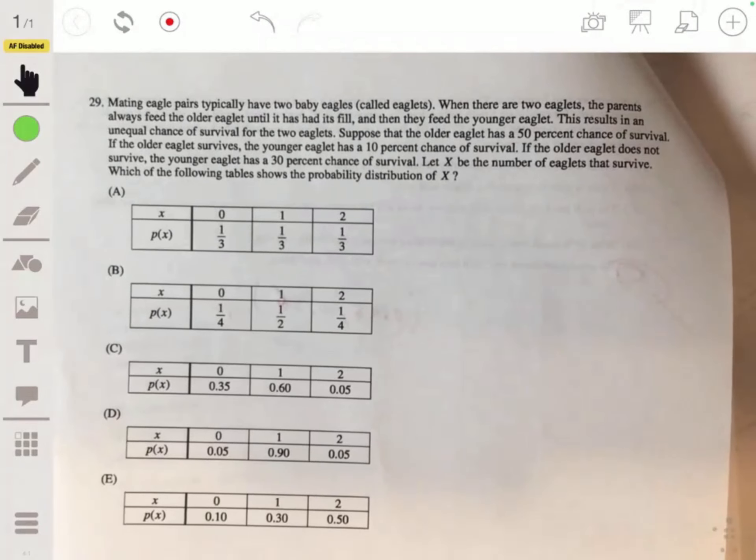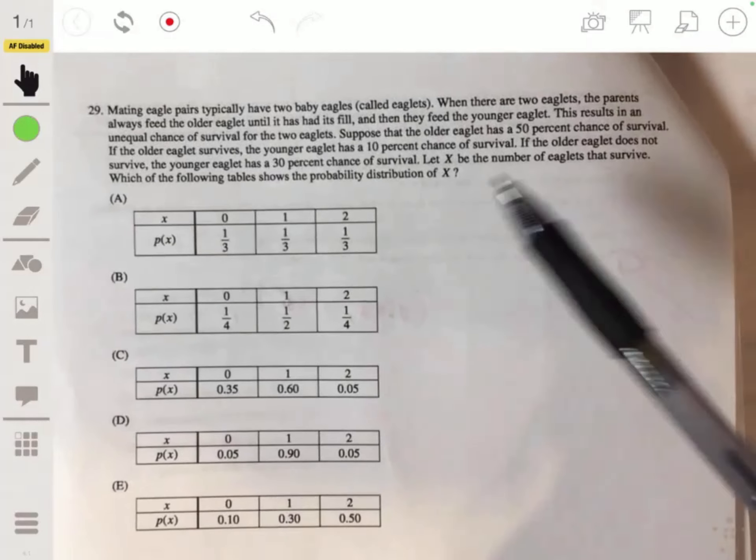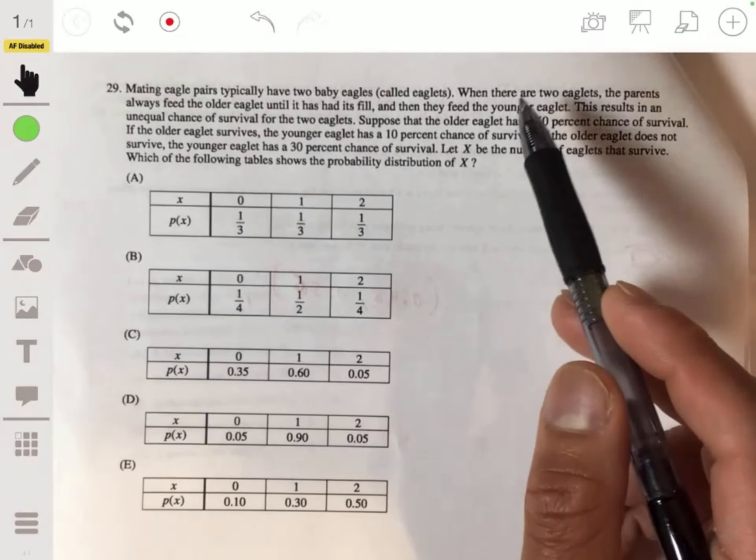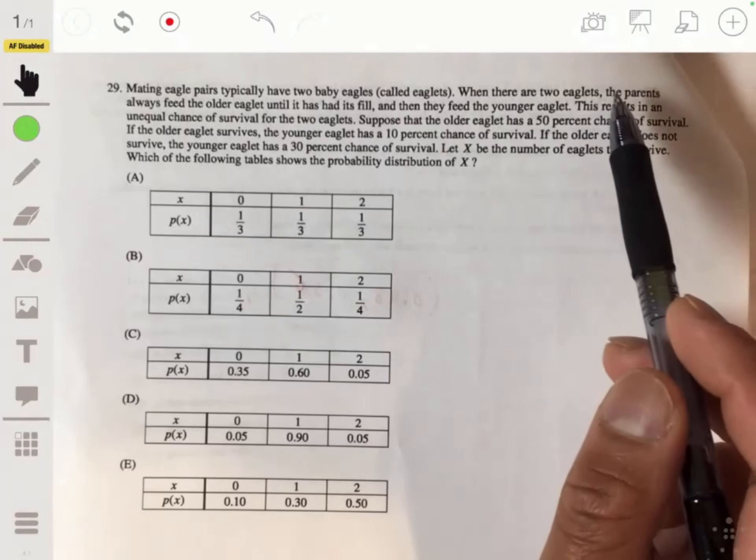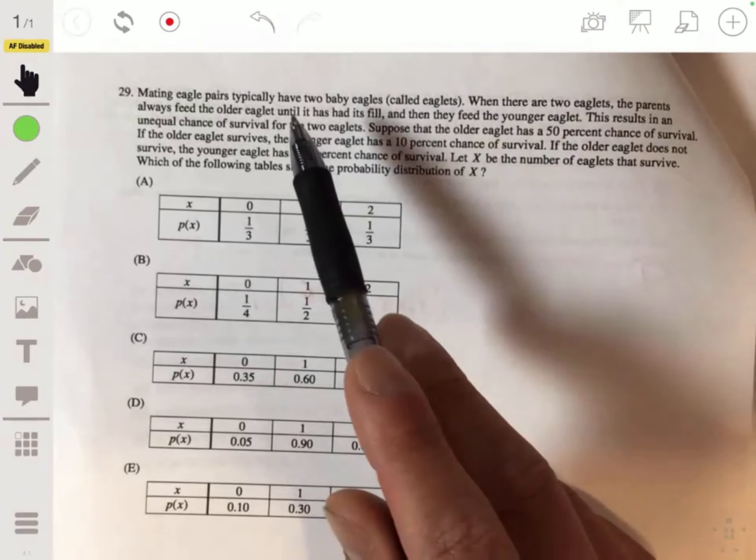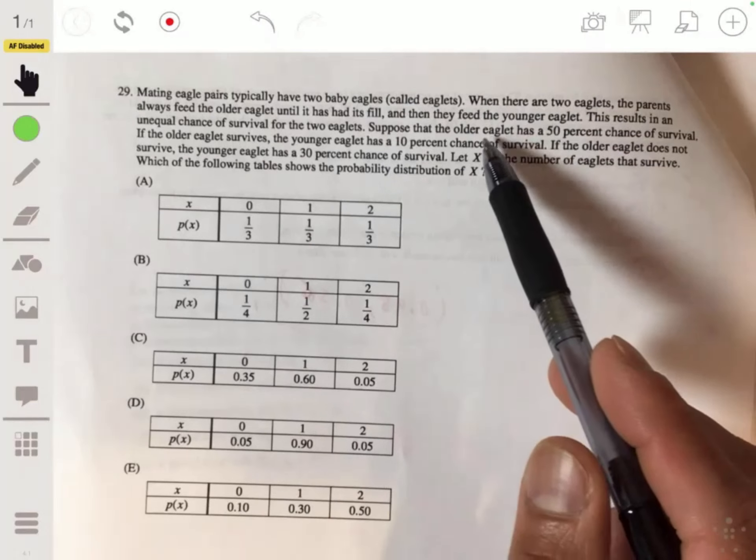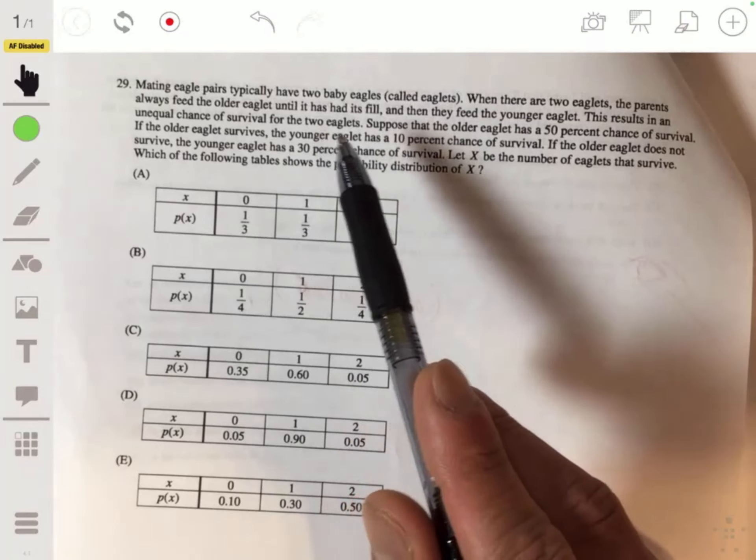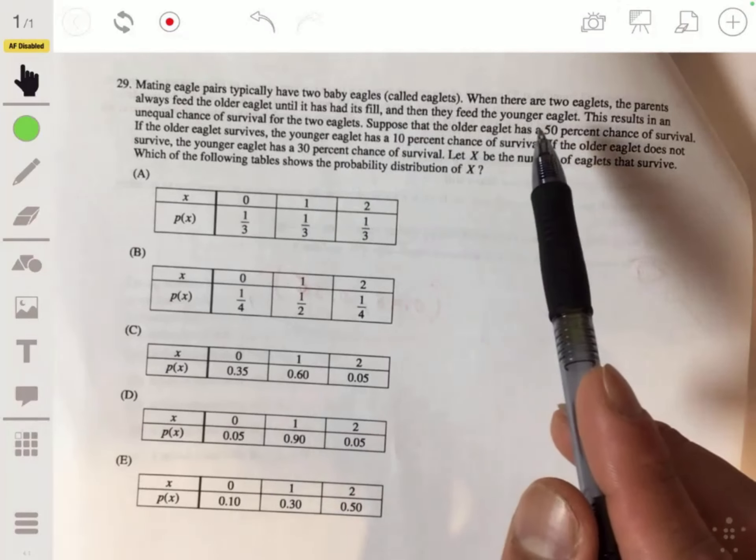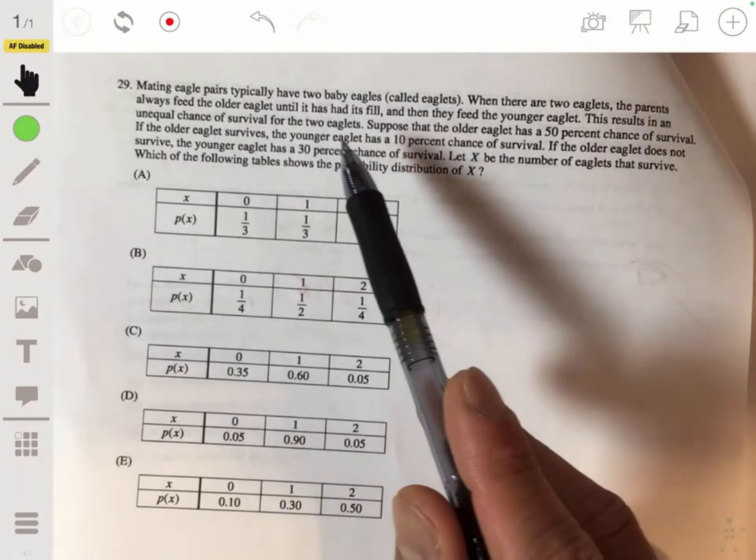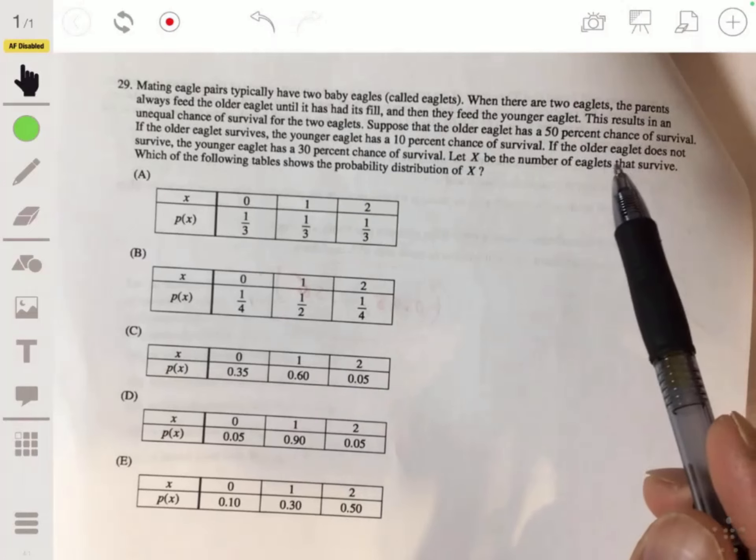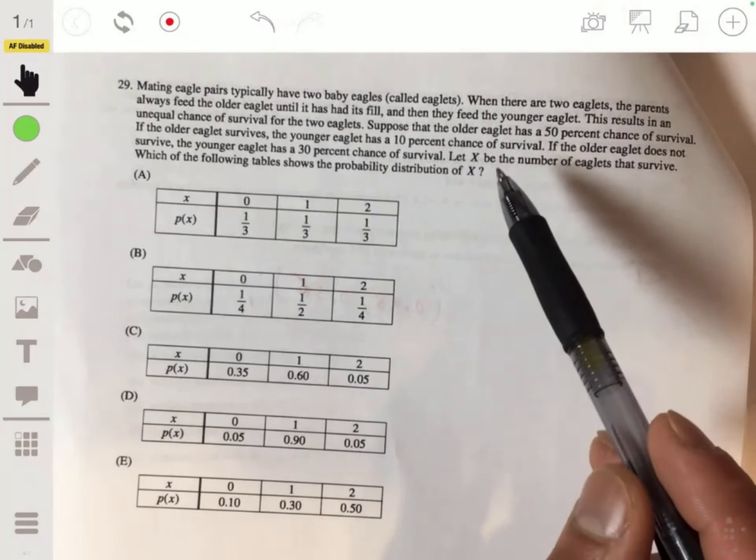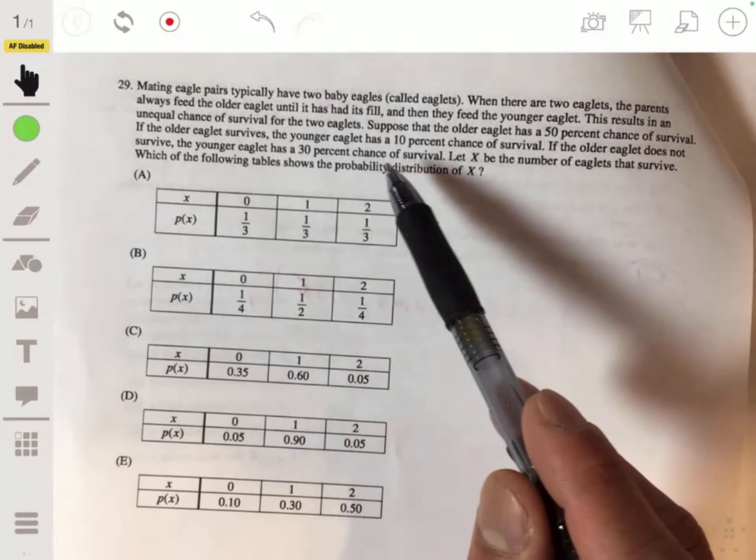29. Eagles typically have two baby eagles called eaglets. When there are two eaglets, the parents always feed the older eaglet until it's had its fill, then they feed the younger eaglet. This results in an unequal chance of survival for the two eaglets. Suppose that the older eaglet has a 50% chance of survival. If the older eaglet survives, the younger eaglet has a 10% chance of survival. If the older eaglet does not survive, the younger eaglet has a 30% chance of survival. Let X be the number of eaglets that survive. Which of the following tables shows the probability distribution of X?